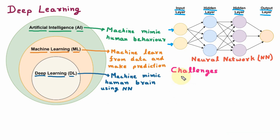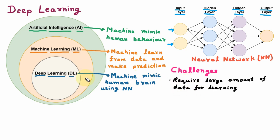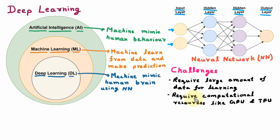Now we are learning the challenges of Deep Learning. The first challenge is it requires a large amount of data for learning. Deep Learning models work like the human brain, and to achieve that complexity they learn from a very huge amount of data. The next challenge is they require computational resources like GPU and TPU — Deep Learning models need large processing power. The next challenge is they are time consuming — Deep Learning models solve complex problems and for that they take more time.